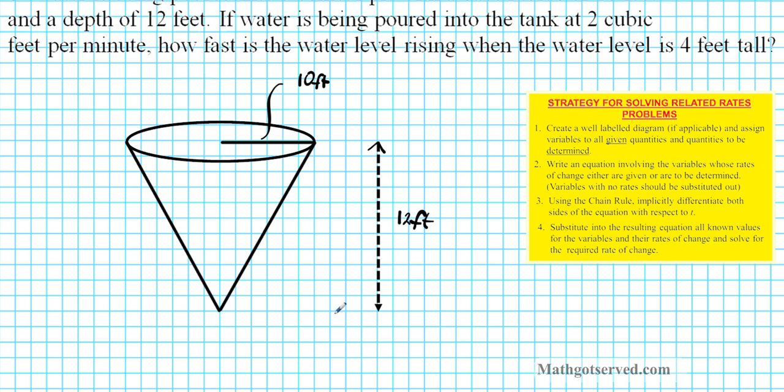Alright, and then let's pick an arbitrary depth where we're going to be calculating how fast the water level is rising. So if we pick an arbitrary depth, say depth h right here, say it's right here, so for this arbitrary depth, this will be the radius r and then this will be the height h right here.